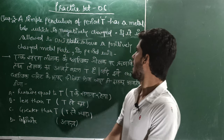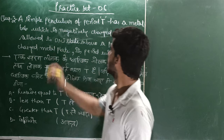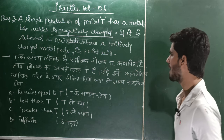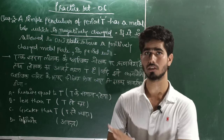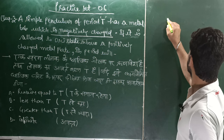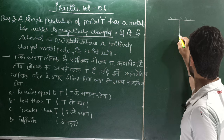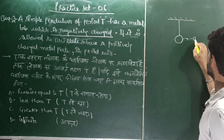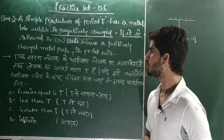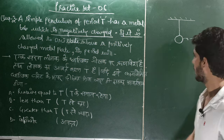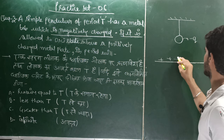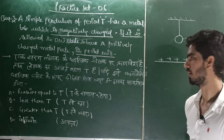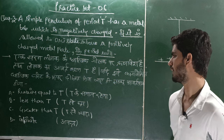Question number 3: a simple pendulum of period T has a metal bob which is negatively charged. If it is allowed to oscillate above a positively charged plate, its period will be — this is a conceptual question. I have a simple pendulum with a negatively charged metal bob, and it oscillates above a positive charge plate. What will its period be: less than T, equal to T, greater than T, or infinity?